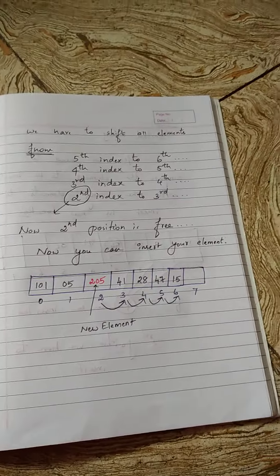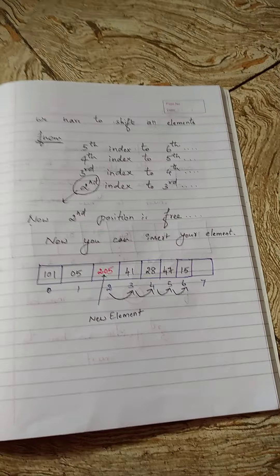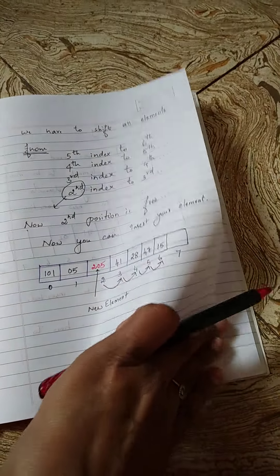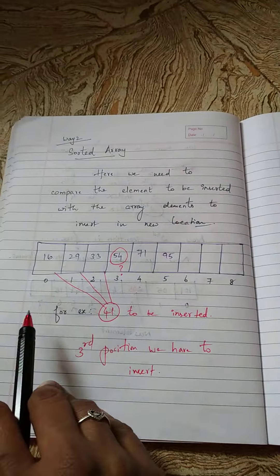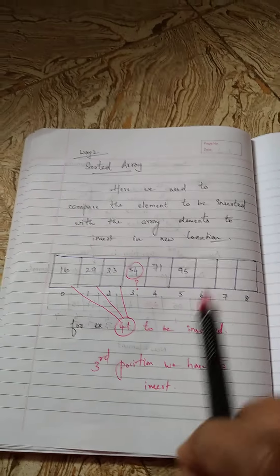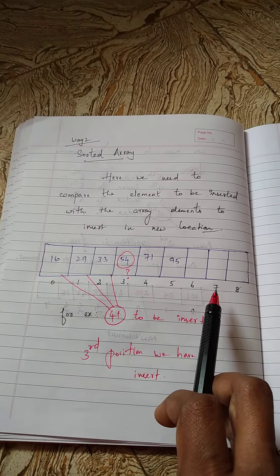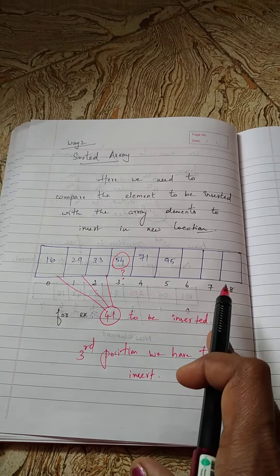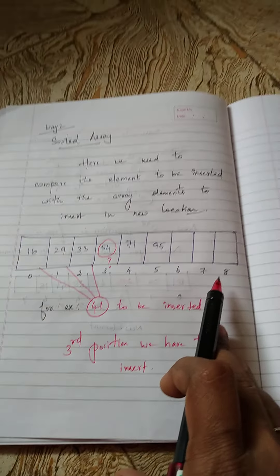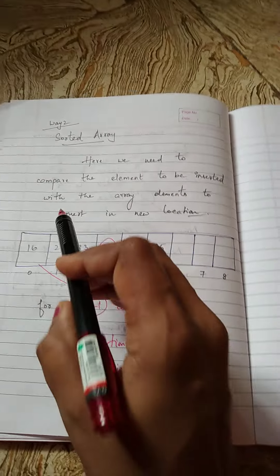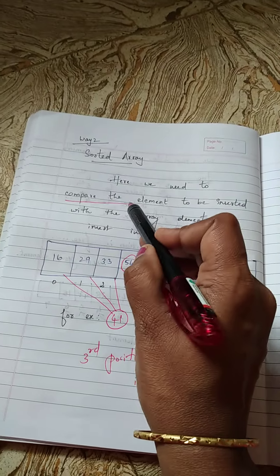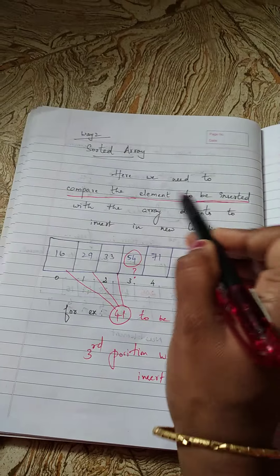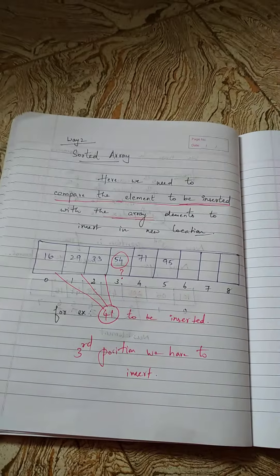Now you may ask me a question: for example if an array is a sorted array. In this case how can you insert? For sorted array, you can't directly specify the location because it is in sorted array. So you have to do comparison, you have to compare the element to be inserted with all the array elements.